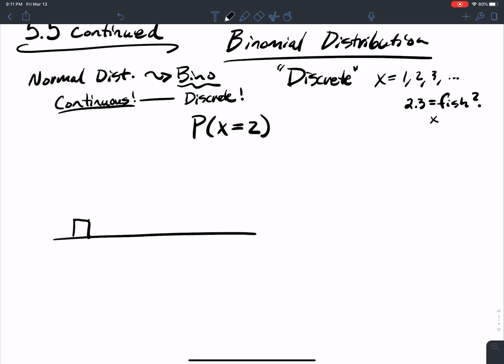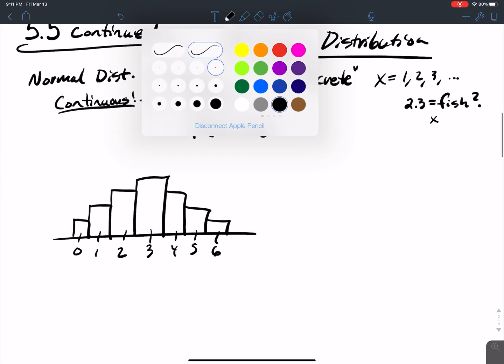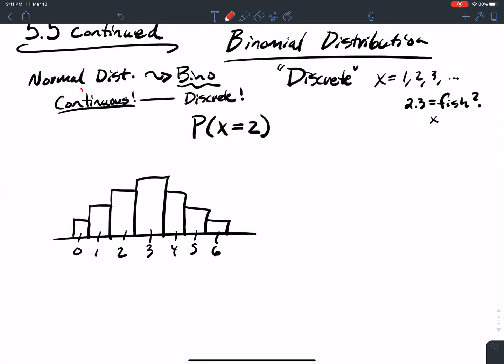So maybe I have a discrete distribution. It looks like this, so maybe 0 successes, 1, 2, 3, 4, 5, 6, and then maybe I've got my continuous, that's my normal approximation, and it looks something like this here.